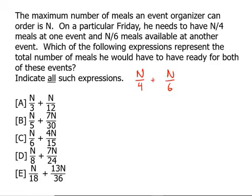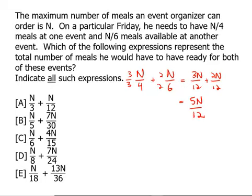To add these two fractions we're going to need a least common denominator. The least common denominator of 4 and 6 is 12. So I'm going to multiply the first by 3 over 3 and the second by 2 over 2. This gives me 3n over 12 plus 2n over 12, which equals 5n over 12 — the exact number of meals he has to have ready on Friday.